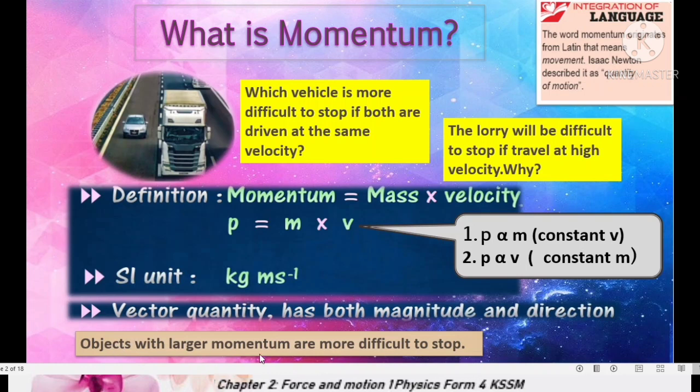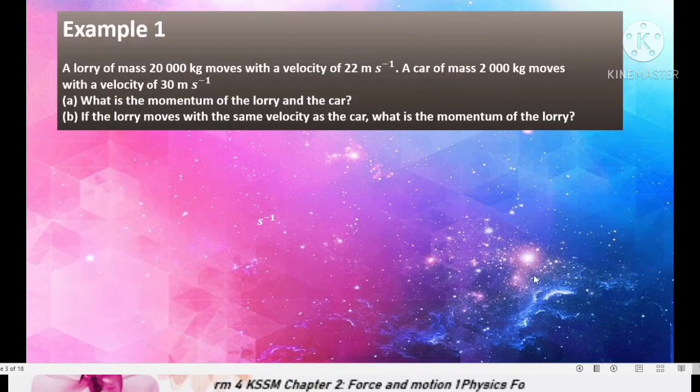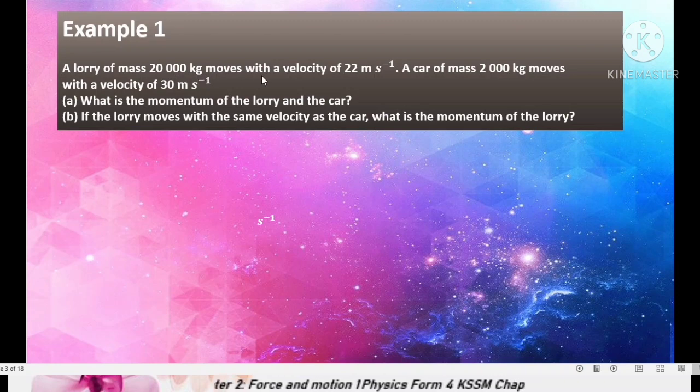What we can say about this concept of momentum, objects with larger momentum are more difficult to stop. Look at example 1. A lorry of mass 20,000 kg moves with velocity of 22 m per second. A car of mass 2,000 kg moves with velocity of 30 m per second to the power negative 1.